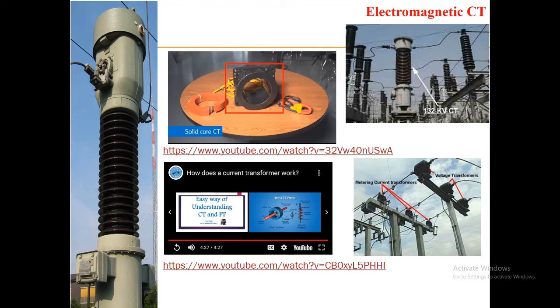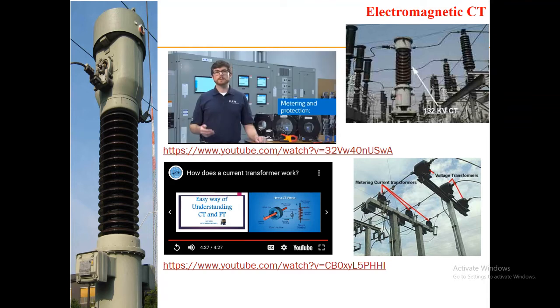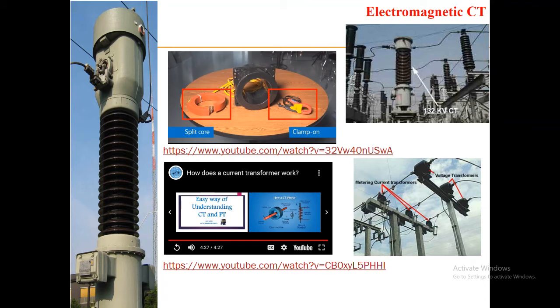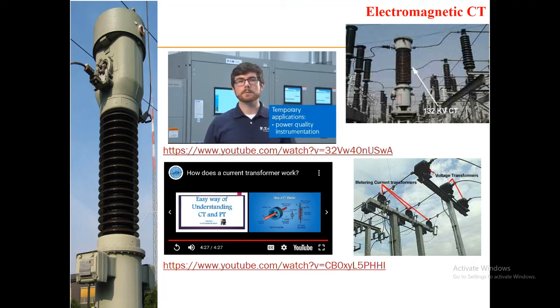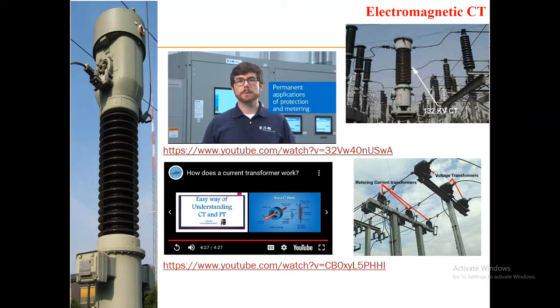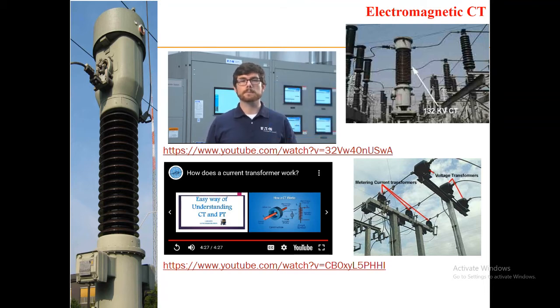Solid core CTs are generally more permanent and are most commonly found for metering and protection in switchboards, panel boards, and switchgear. Split core and clamp-on CTs are generally used in more temporary applications such as power quality instrumentation. For permanent applications of protection and metering, CTs can be found anywhere from generators to transformers to connected loads, or anywhere we want to monitor current flowing in the system.